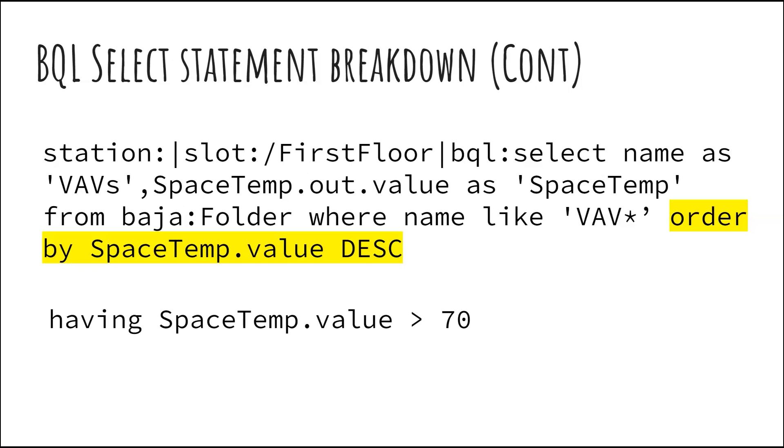We can also use the HAVING clause of BQL to show any result having the spacetemp.value properties that are greater than 70 degrees.